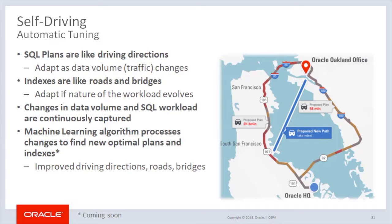Oracle execution plans are like driving directions — they will change as the data distribution changes, data volumes, and statistics. Indexes can be thought of as roads and bridges. With auto indexing, new routes will be added as the workload continues. Changes in data volume and SQL workloads are continuously captured, and machine learning algorithms process changes to find new optimal plans and indexes. An expert system that implements indexes based on what a skilled performance engineer would do is part of the environment.